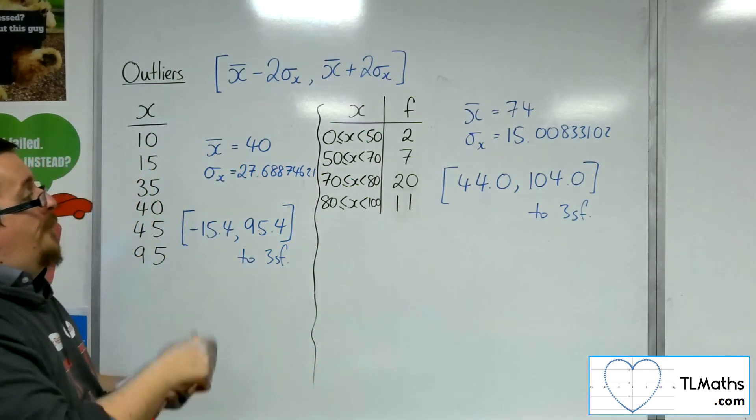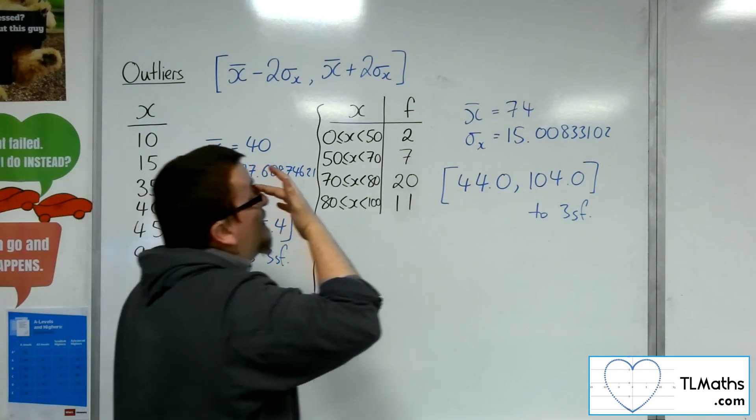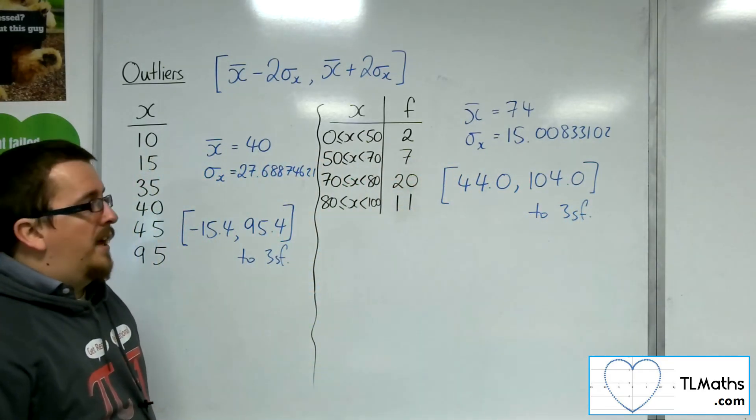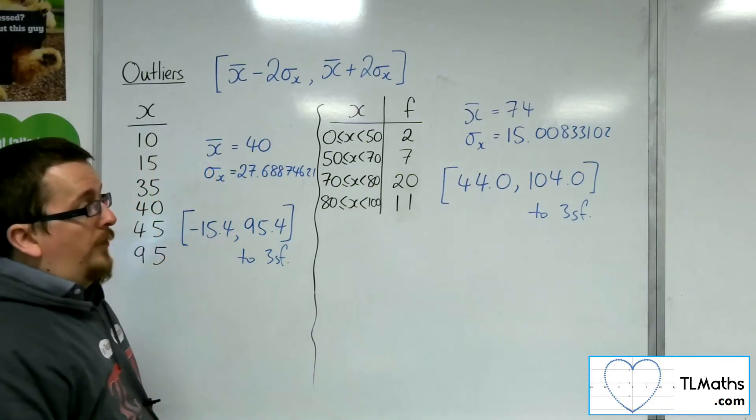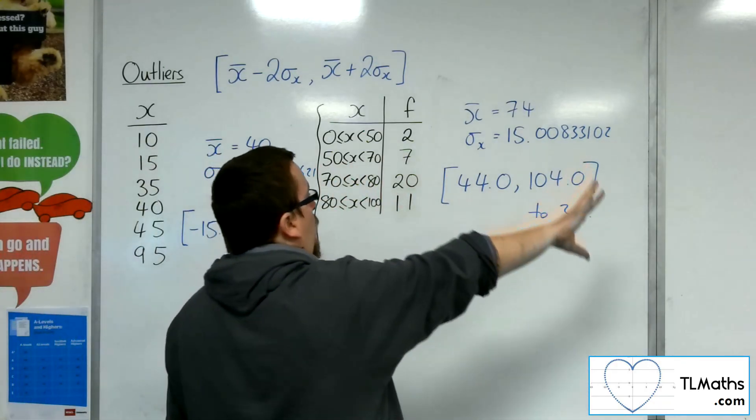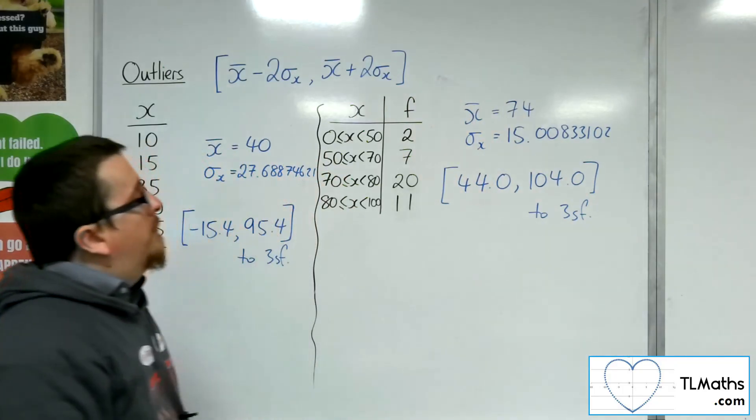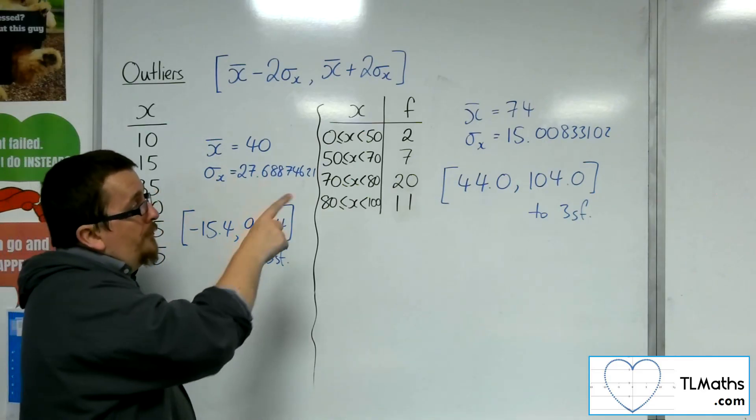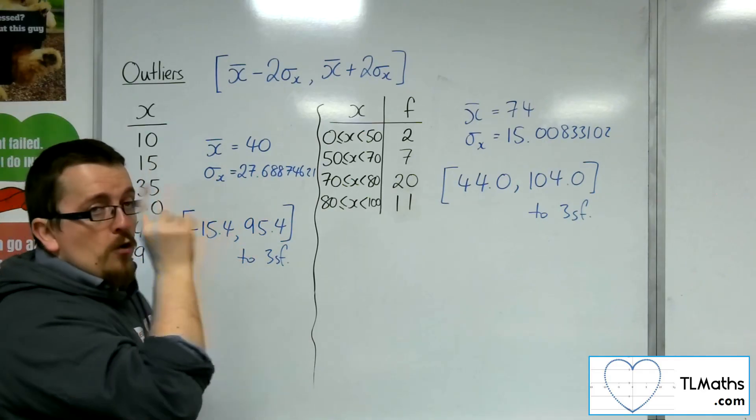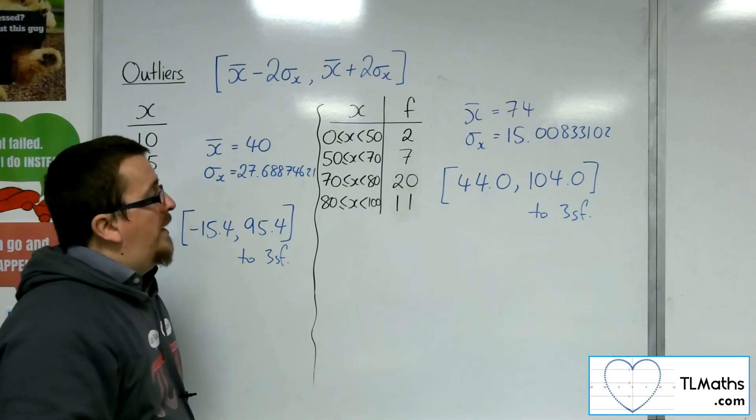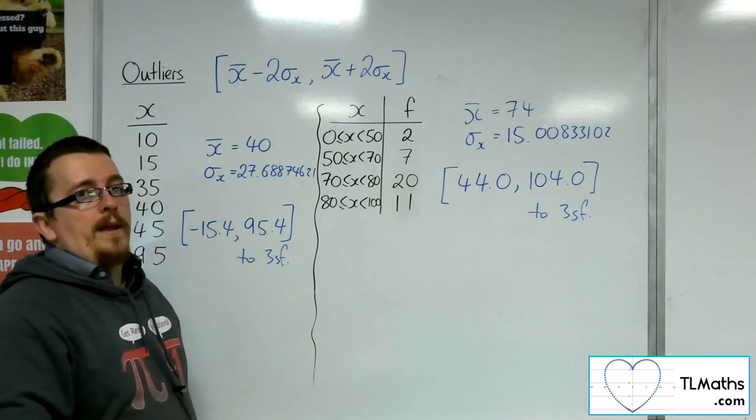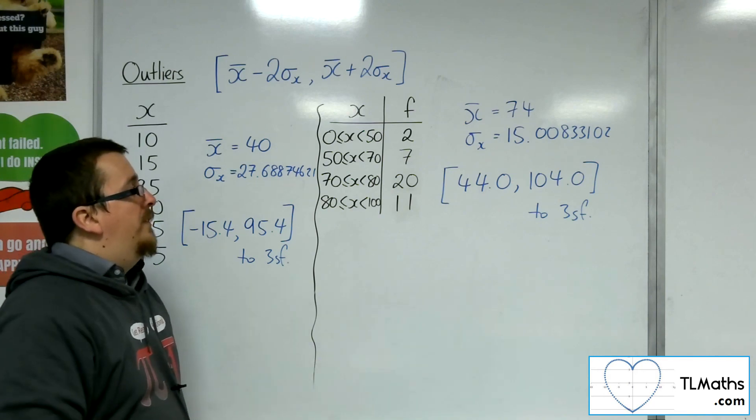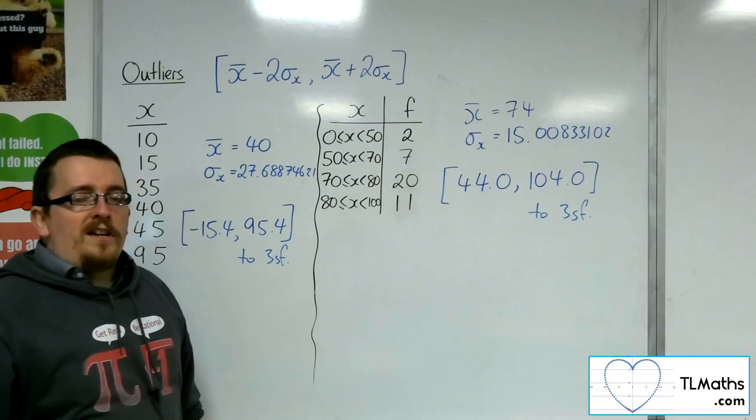So, for this, I'm identifying no outliers that are greater than 104 because we know that grouping goes up to 100. So, it's definitely nothing larger than 104. There could be something smaller than 44. I know that there are two data items between 0 and 50, but I don't know where they are. So, all I can say is that there could be up to two outliers for this data set, but that's definitely not guaranteed.